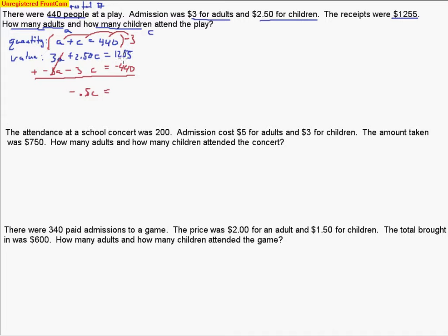I forgot to multiply the 3 by the 440, so let's go ahead and fix that mistake. I noticed the error when looking at the negative signs — if I did the subtraction there, I'd end up with a positive number, and when you divide a negative into a positive you get a negative. You shouldn't have a negative number of people; that wouldn't make sense. Looking for errors like that is an important thing to do when solving a problem. So 440 times 3: I get 0, then 12, carry a 1, and I get 1,320.